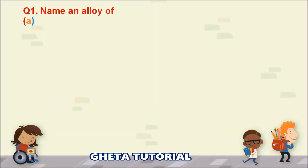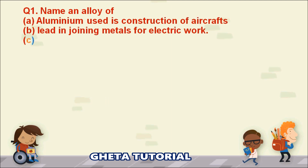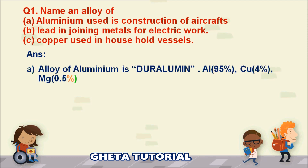The first question: name an alloy of aluminium used in construction of aircraft. The answer is Duralumin. Duralumin is an alloy of aluminium with four constituents: aluminium 95%, copper 4%, magnesium 0.5%, and manganese 0.5%.